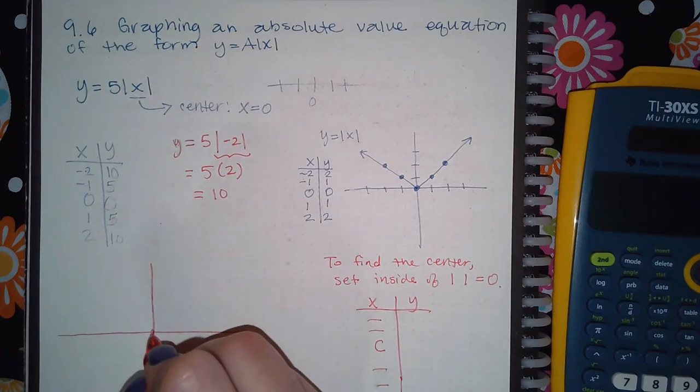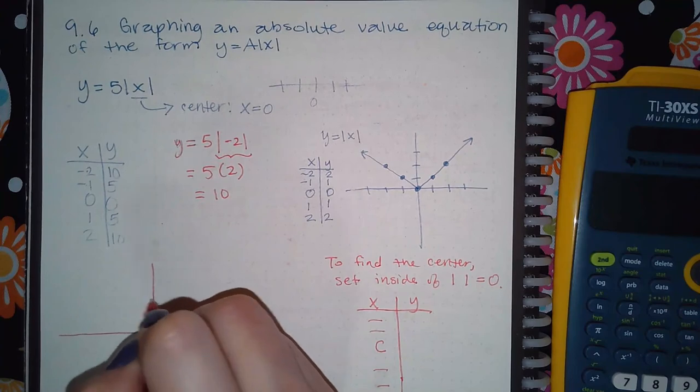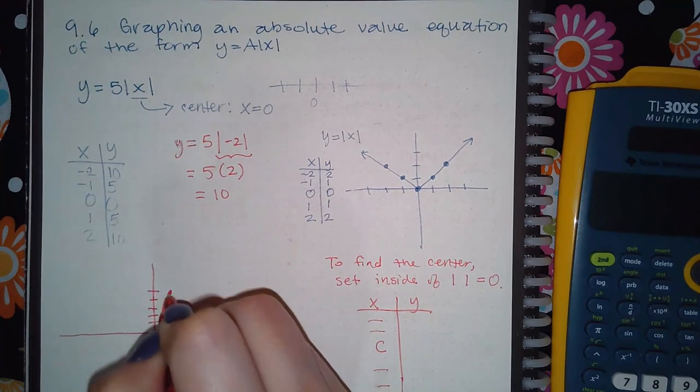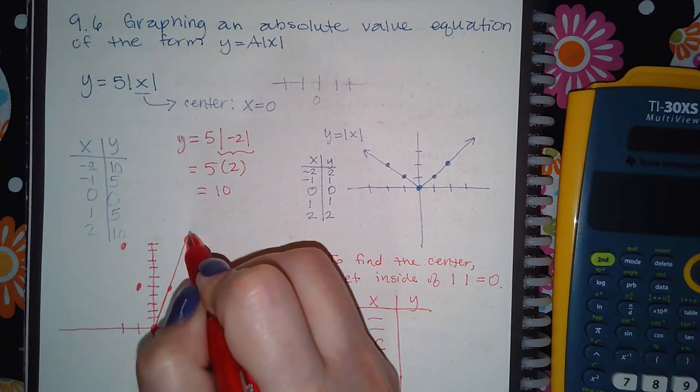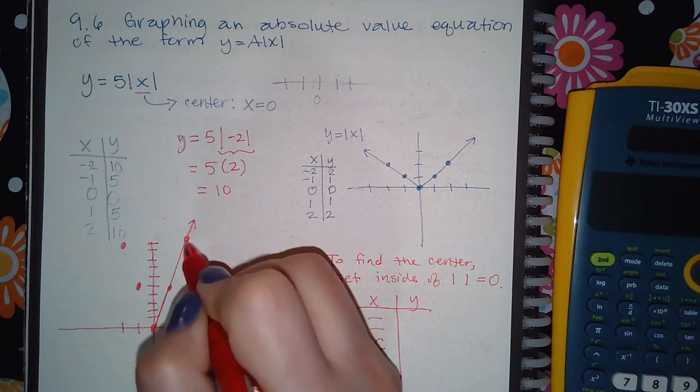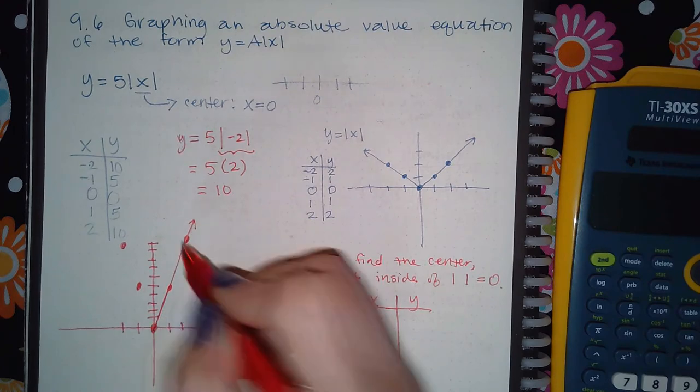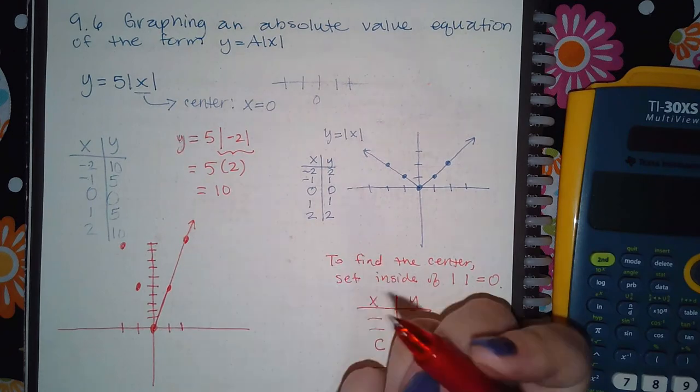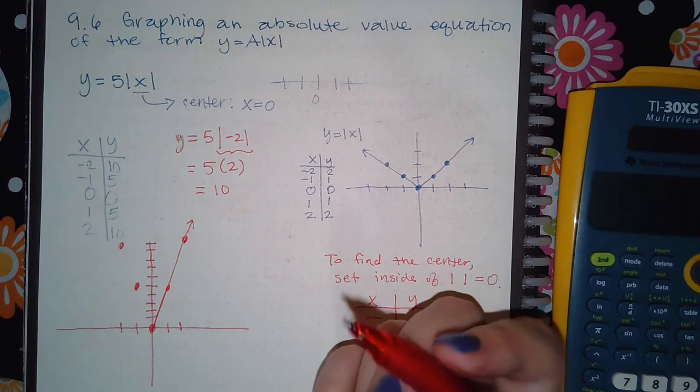So start with the center, zero, zero, and then one, and one, two, three, four, five.